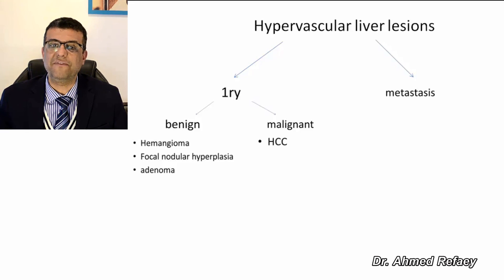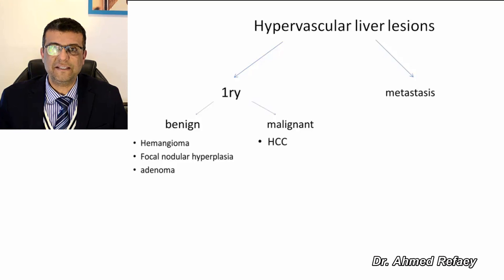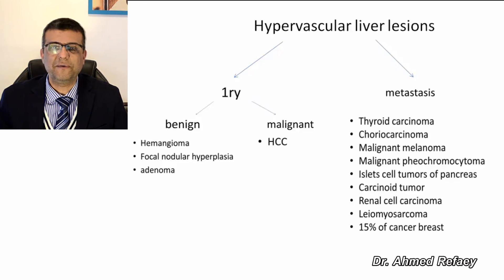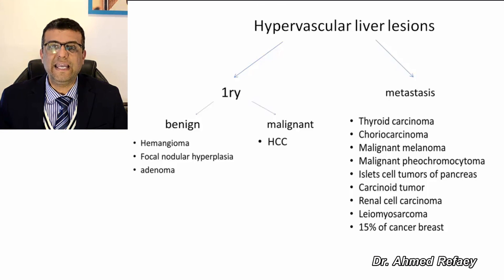Regarding metastatic hypervascular liver lesions, 80% of metastases to the liver are from hypovascular tumors and only 20% are from hypervascular primary tumors. The primary hypervascular tumors are approximately nine: thyroid carcinoma, choriocarcinoma, malignant melanoma, malignant pheochromocytoma, islet cell tumors of the pancreas, carcinoid tumor, renal cell carcinoma, leiomyosarcoma, and 15% of breast cancer.